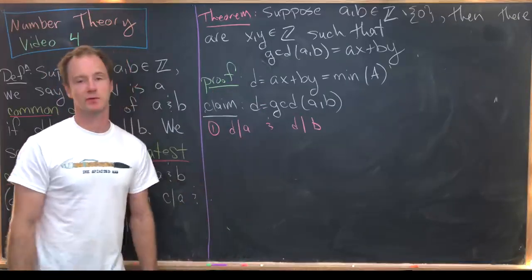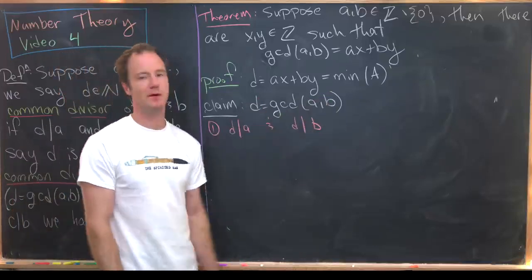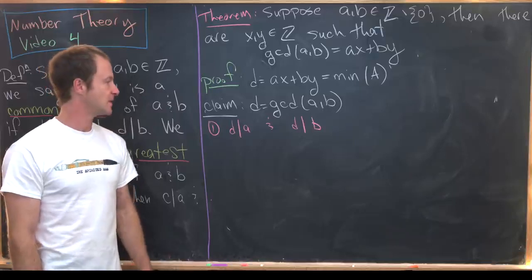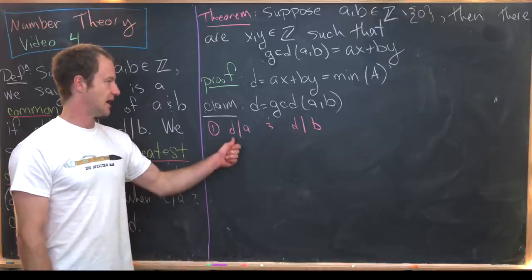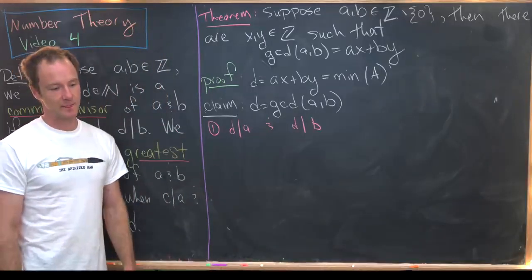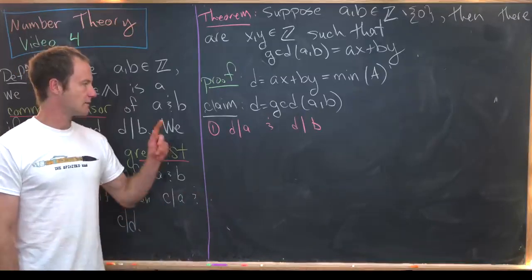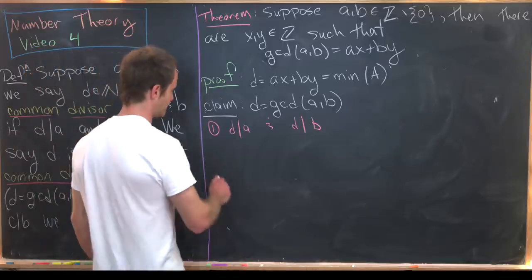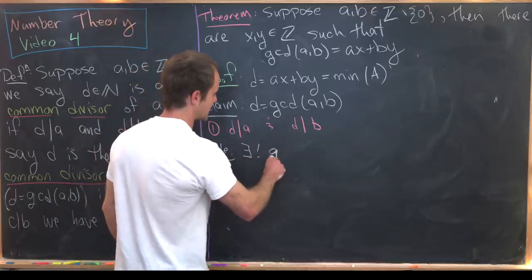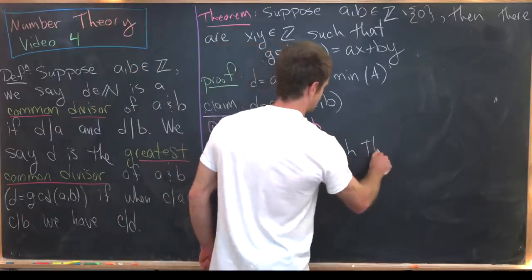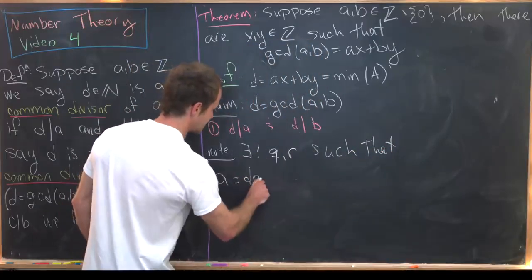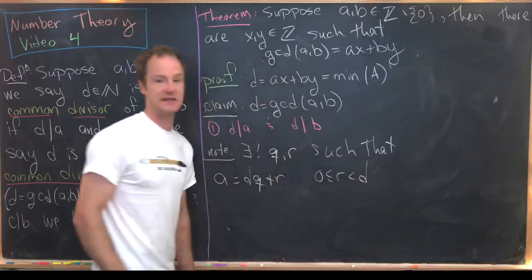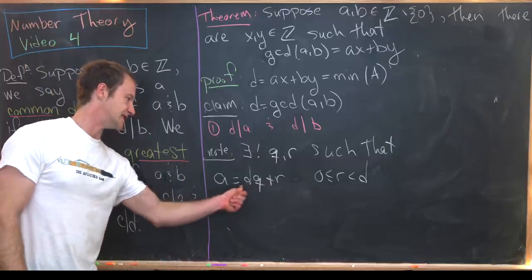On the last board we constructed this number d as a linear combination of a and b, as the minimum of some set A. Now I want to claim that d is the GCD of a and b. We'll start by proving that it is a common divisor. Let's divide a by d with remainder using the division algorithm: there exist unique q and r such that a equals dq plus r, where 0 ≤ r < d.